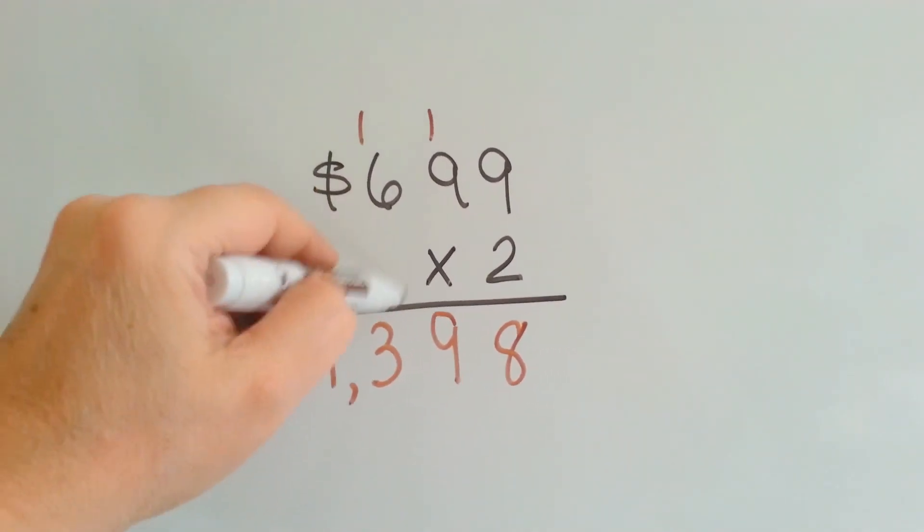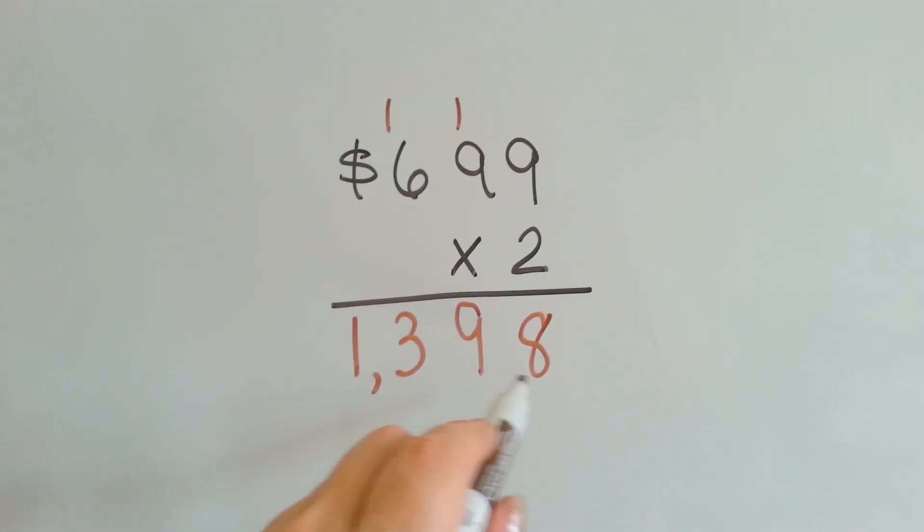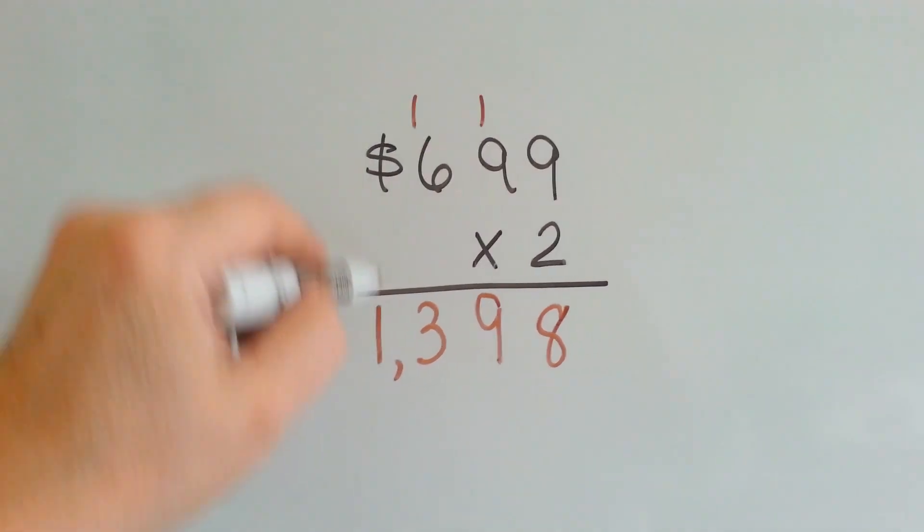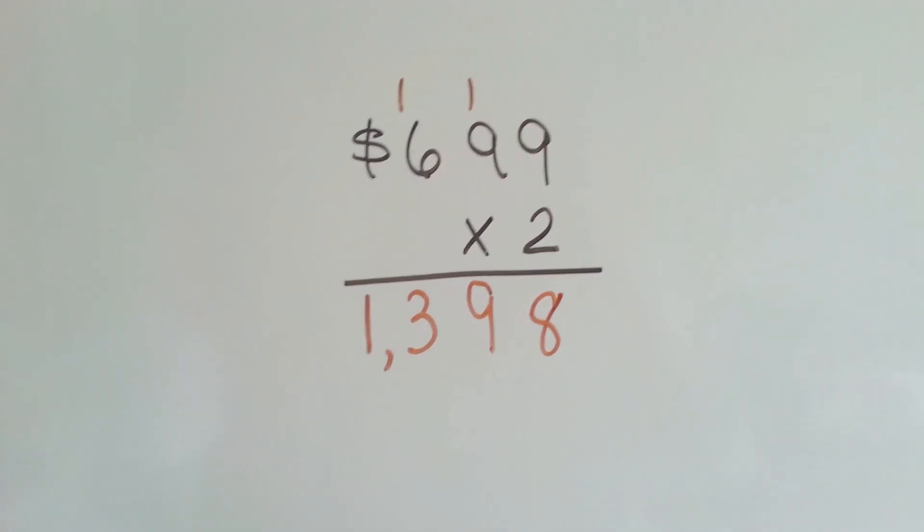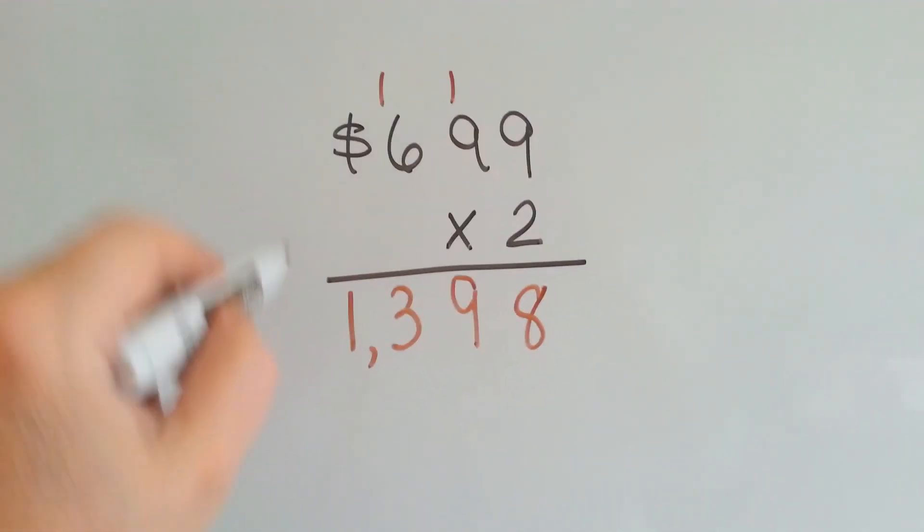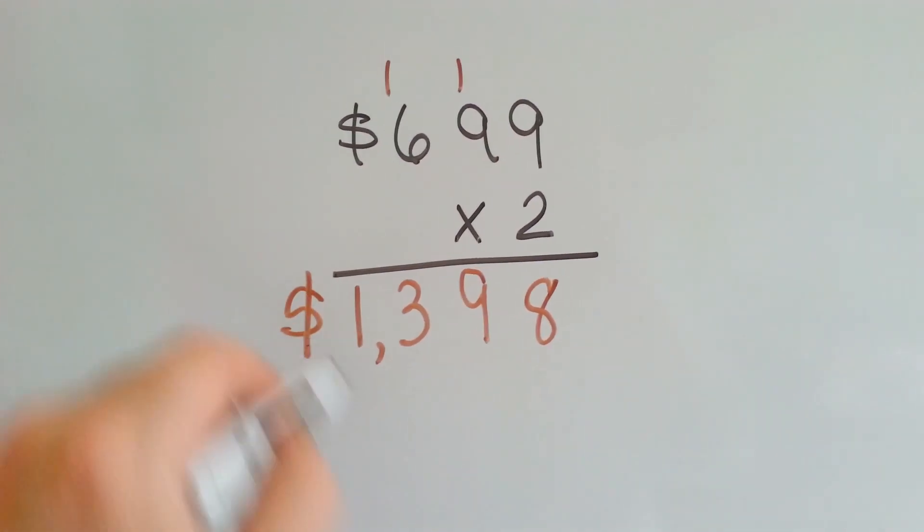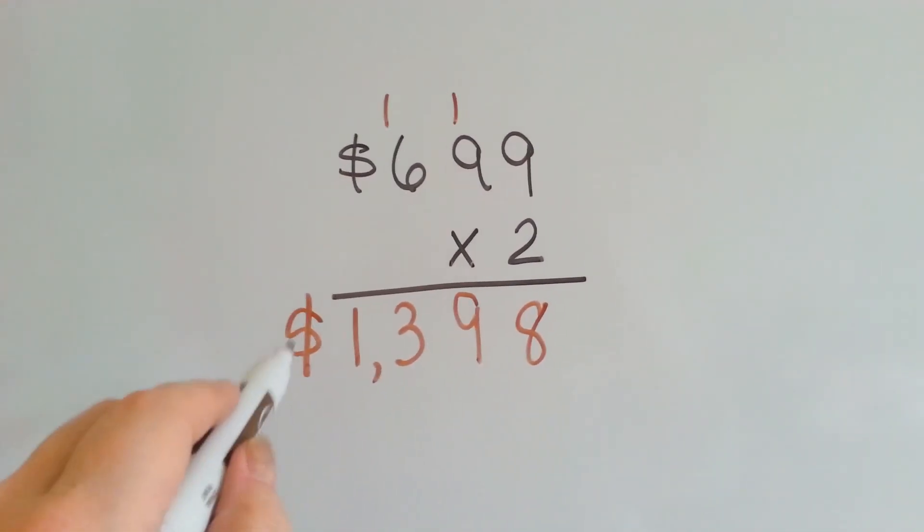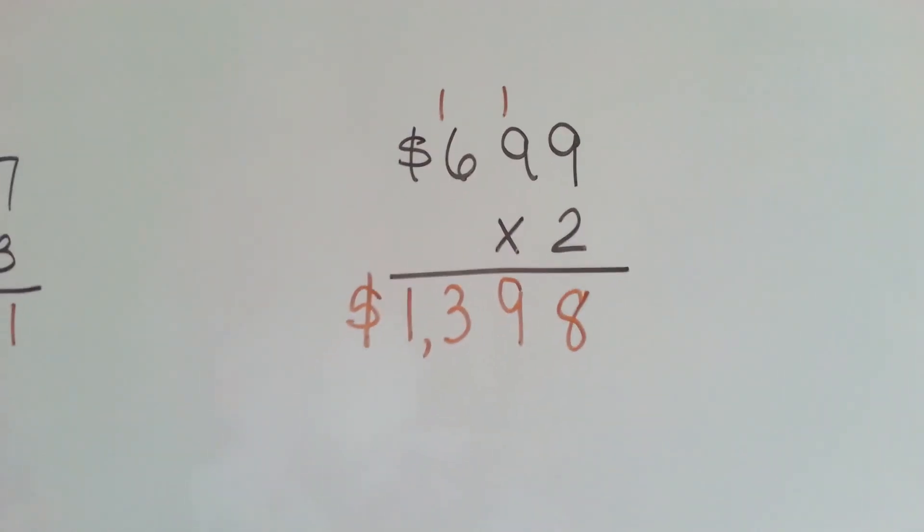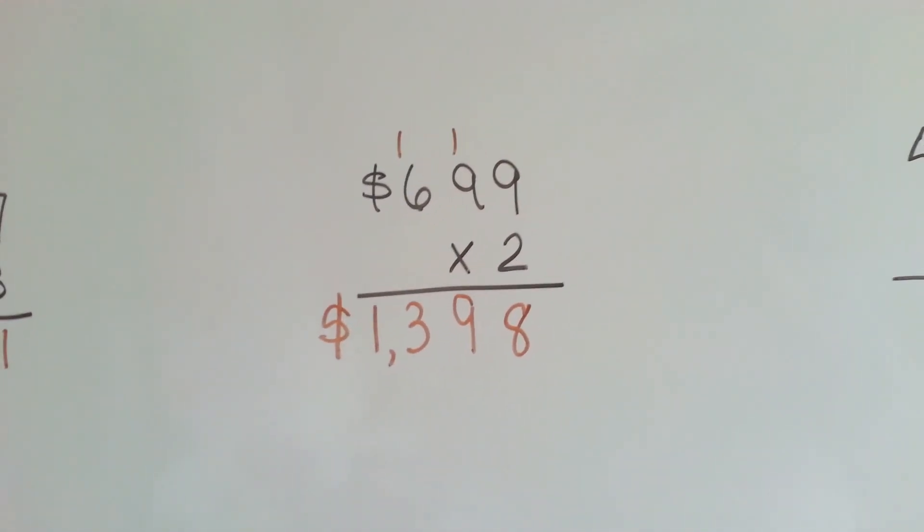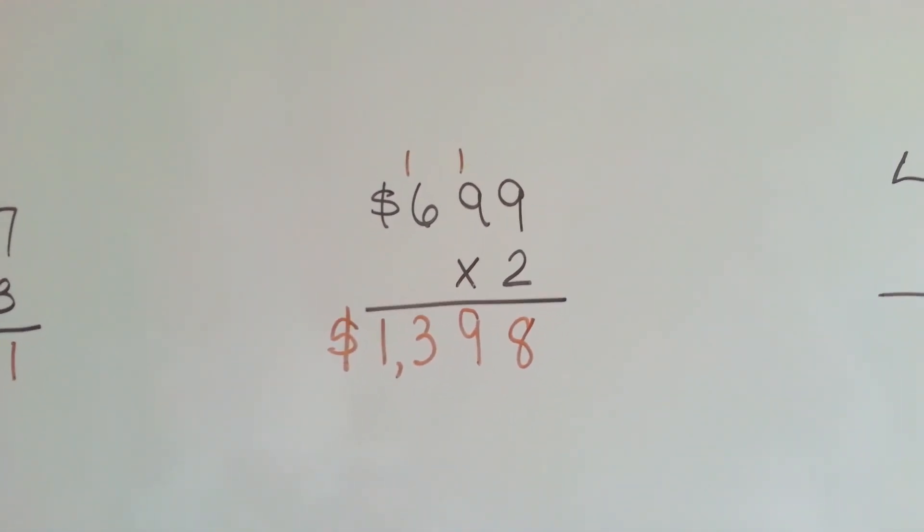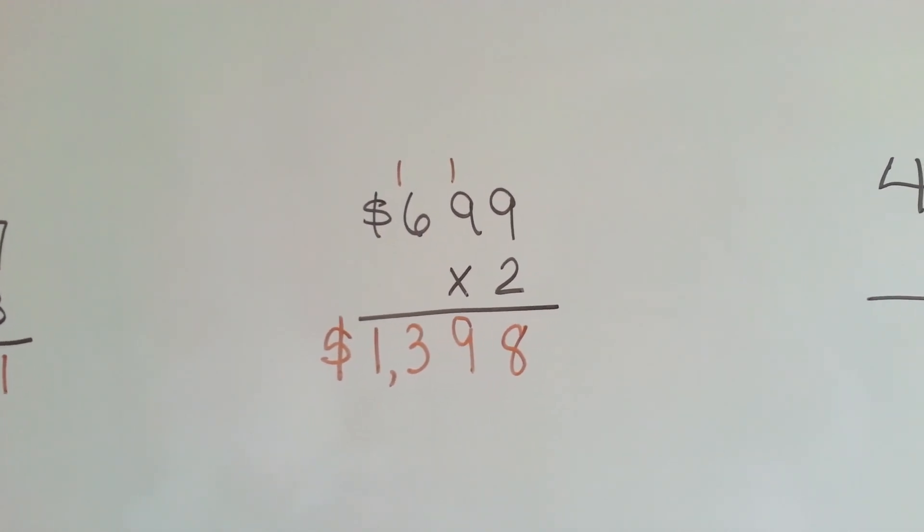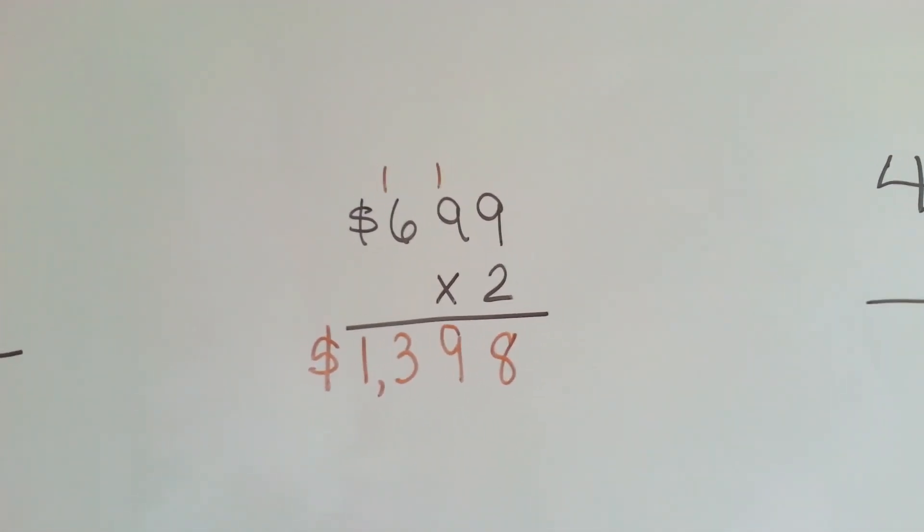See how even though this was 3 digits, it created a 4-digit answer. Now because of this dollar sign, we have to make sure we put that in the answer. You could get it marked wrong if there's a dollar sign and you don't put it in your answer. So 699 times 2 is $1,398.